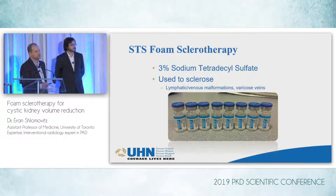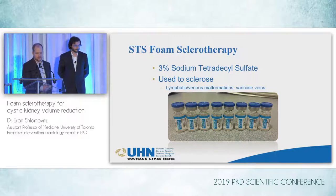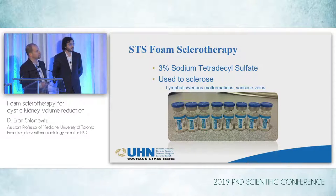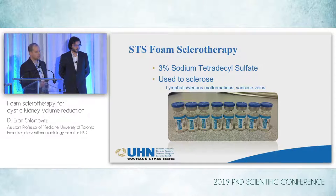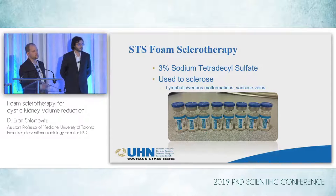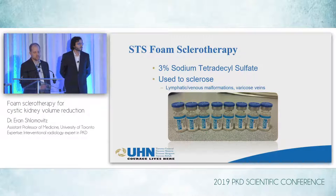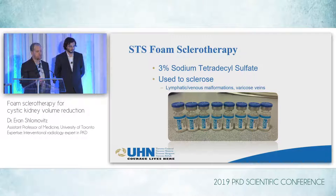The approved dose for STS is up to about 10 mL of 3% STS per session, but that's for intravascular use. We don't really know what the maximal dose is for use in these cysts, so over time we have increased the dose. If you were here three years ago, we were using up to 10 mL — same as approved — and we have gradually increased to now using up to 20 cc's per session, which allows us to treat bigger cysts, more cysts at a time, and do in one stage what we used to do in two stages.